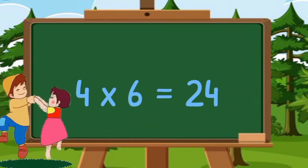20 1's are 20. 20 2's are 40. 20 3's are 60. 20 4's are 80. 20 5's are 100. 20 6's are 120. 20 7's are 140. 20 8's are 160. 20 9's are 180. 20 10's are 200.